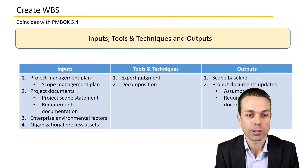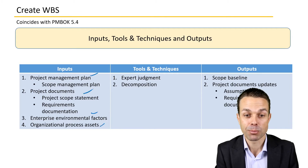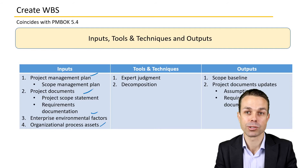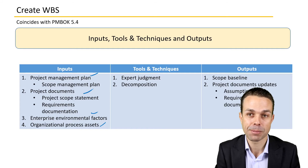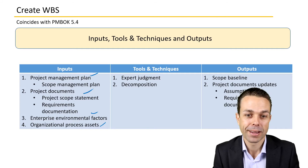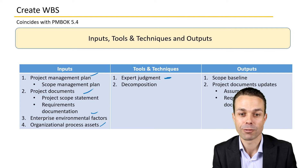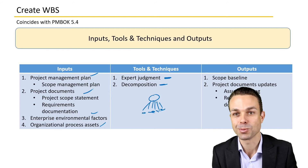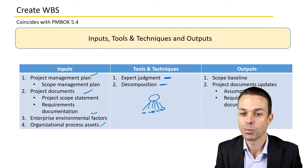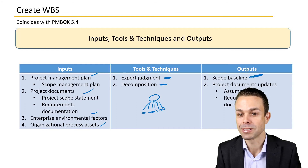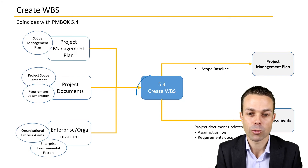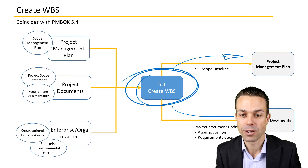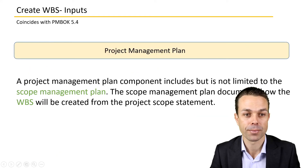For inputs, tools and techniques, and outputs: we have the project management plan, project documents, enterprise environmental factors, and organizational process assets as inputs. The project management plan is one of the inputs in almost all of the processes you will see. Tools and techniques include expert judgment from experts in relevant areas, and decomposition — breaking things down into smaller and smaller levels. Outputs will be our scope baseline and project document updates.